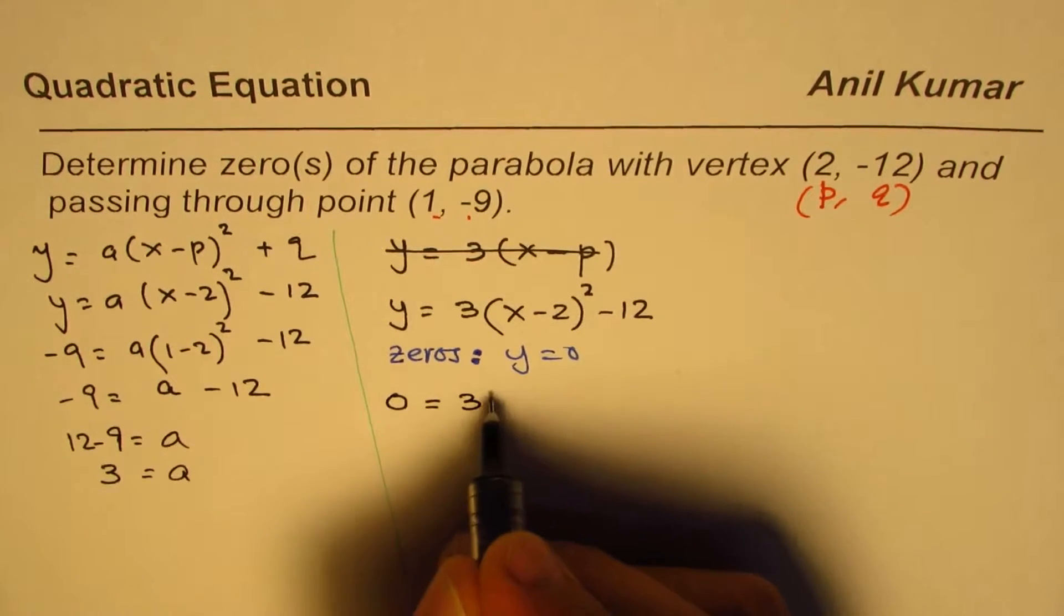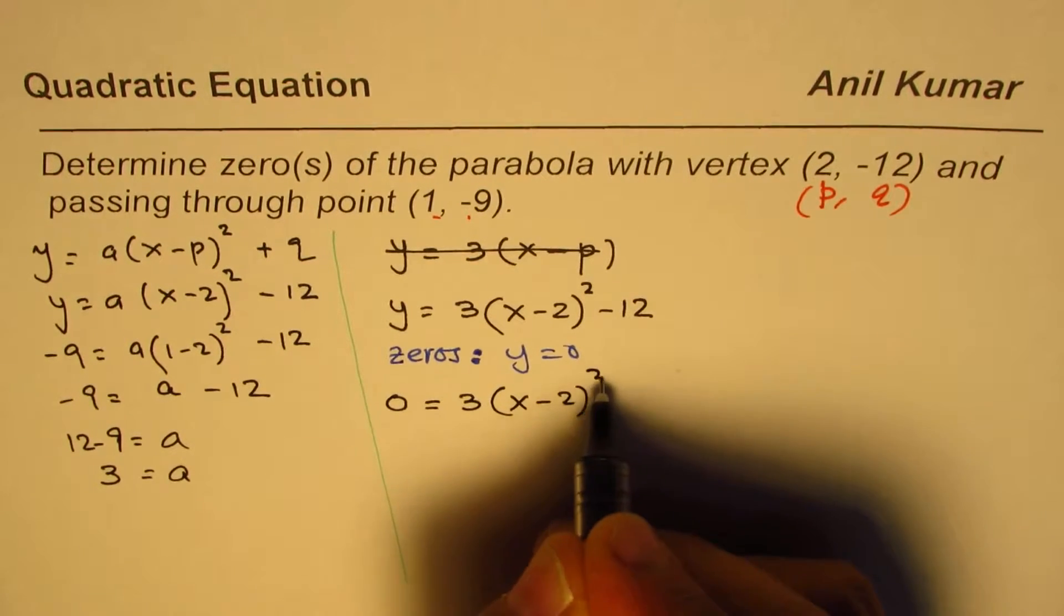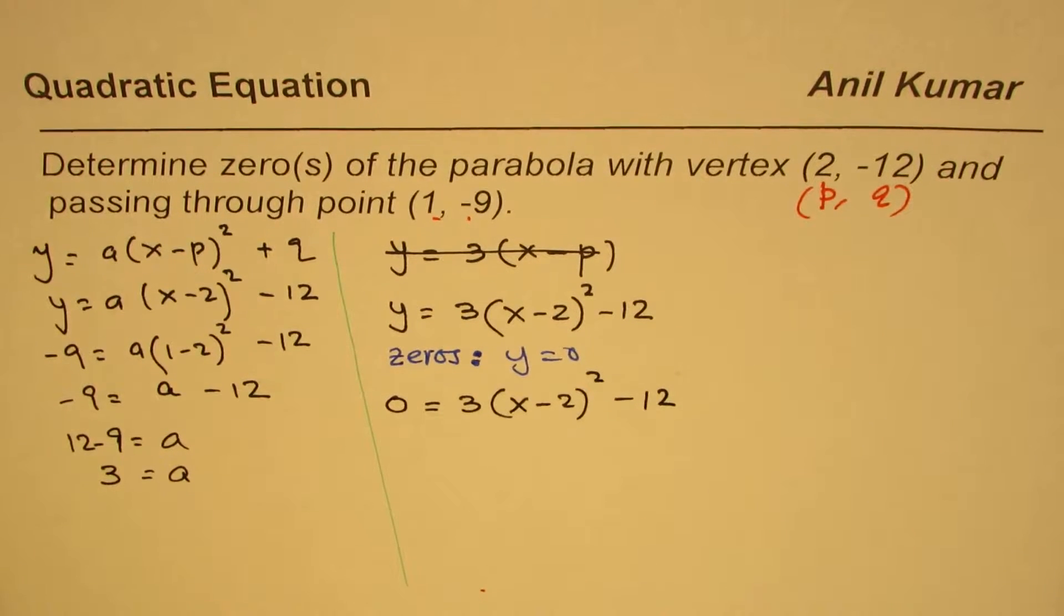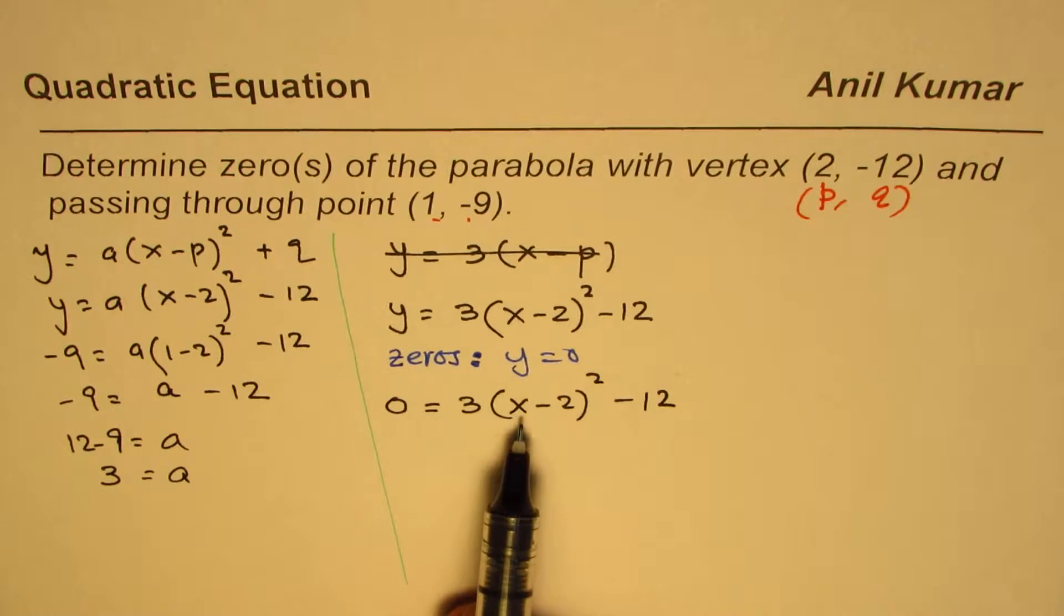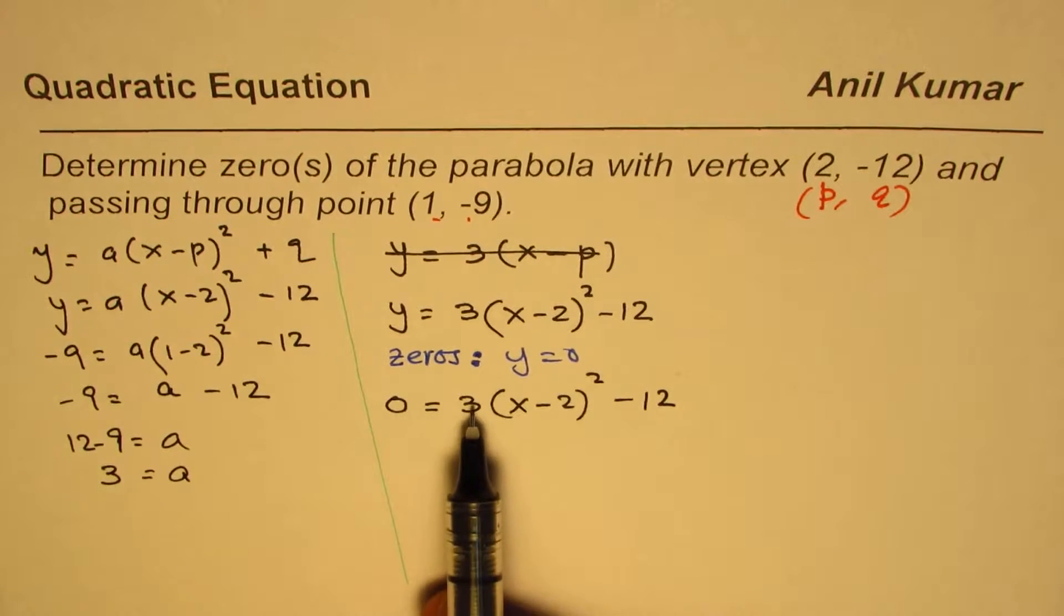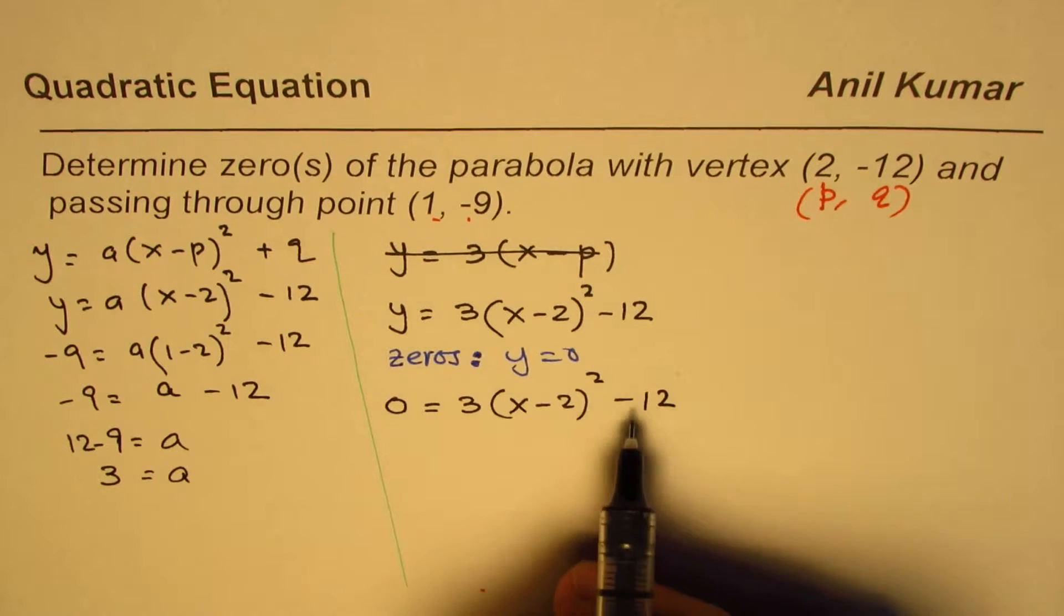Now we have the equation 0 = 3(x - 2)² - 12. How to solve such an equation? To find the value of x, we can bring 12 to the left side, divide by 3, take the square root, and add 2. These are the steps involved.